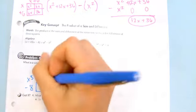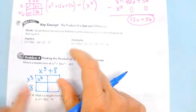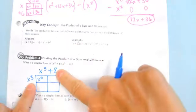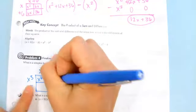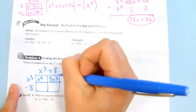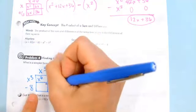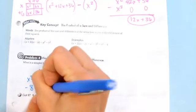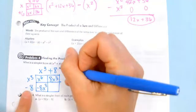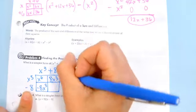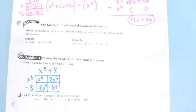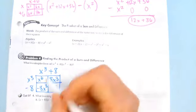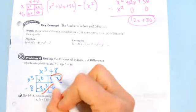This one's a little more challenging. What's x to the third power times x to the third power? x to the 6. What's x to the third power times positive 8? 8x to the third power. So what's x to the third power times negative 8? And then finally, negative 8 times positive 8 is negative 64.